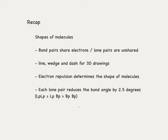Recap for shapes and molecules: bond pairs share electrons between the atoms while lone pairs are unshared. For 3D drawings, a solid line indicates bonds in the plane, a wedge is coming towards you, and a dash is going away from you. Electron repulsion determines the shape of molecules, and each lone pair reduces the bond angle between bond pairs by 2.5 degrees. Finally, lone pair–lone pair repulsion is greater than lone pair–bond pair repulsion, which in turn is greater than bond pair–bond pair repulsion.